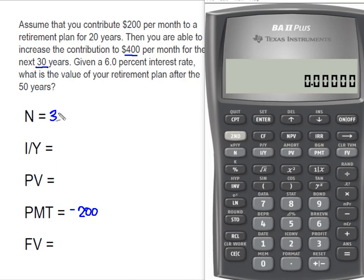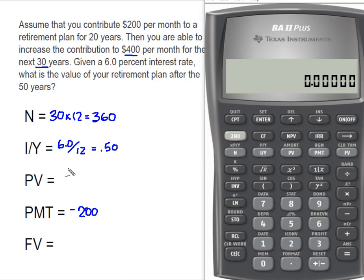So 30 years times 12 months gives us an N of 360. Our interest rate hasn't changed — it's still 6% divided by 12 for a 0.50. We're going to treat this as if it was a new set of cash flows and compute the future value of that additional $200 for the 30 years that you can afford to have your total contribution equal to $400.